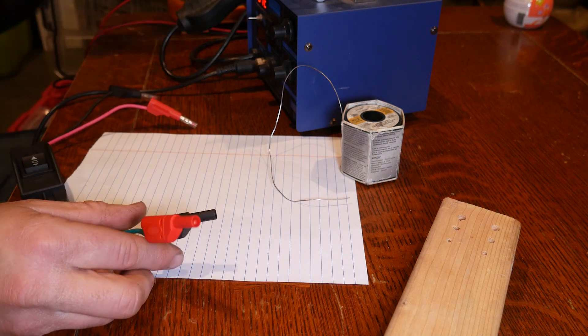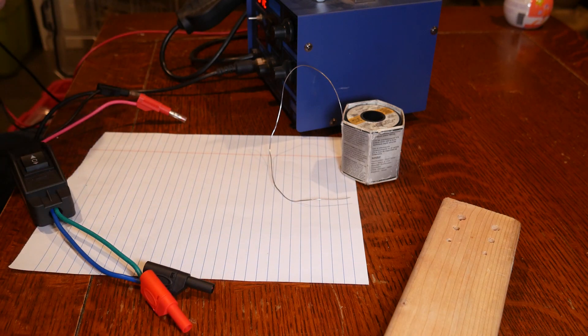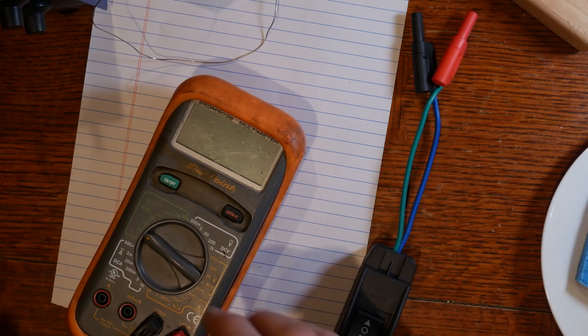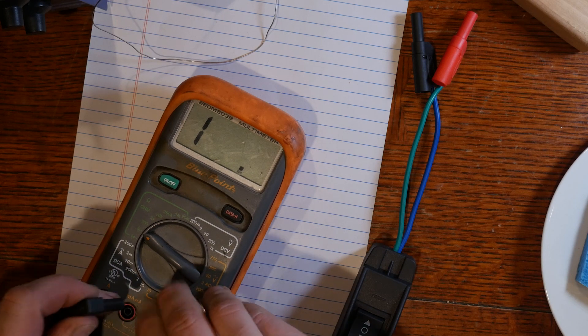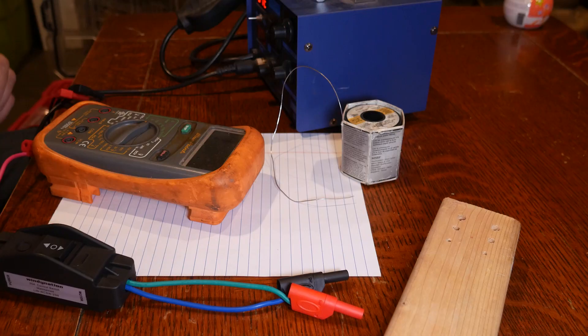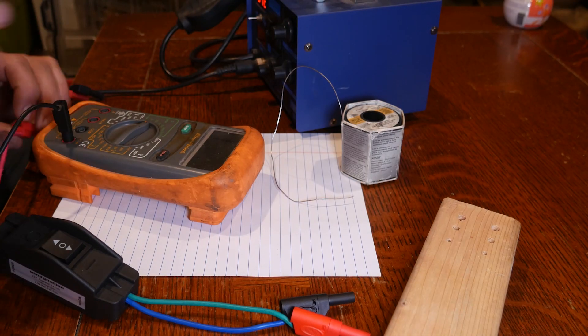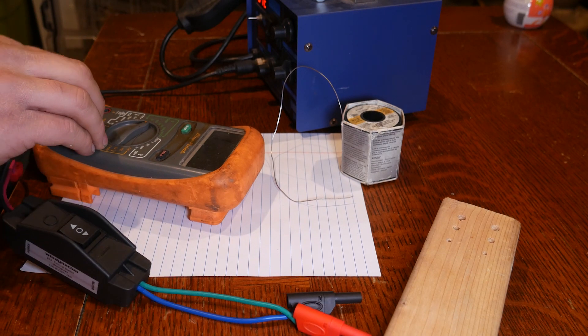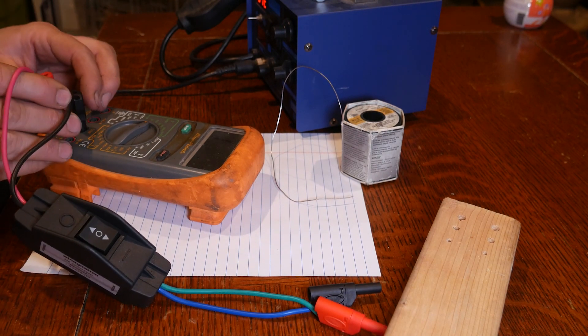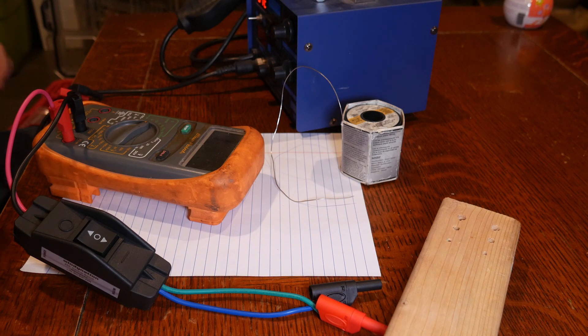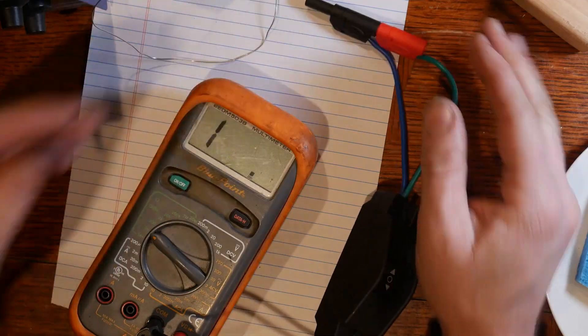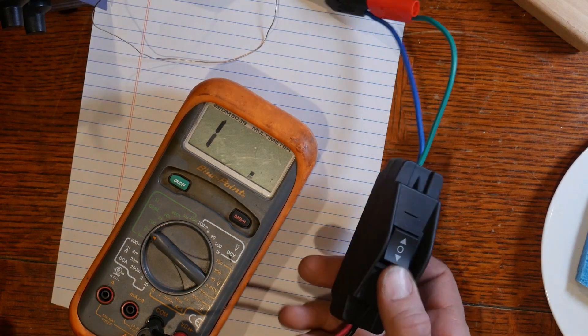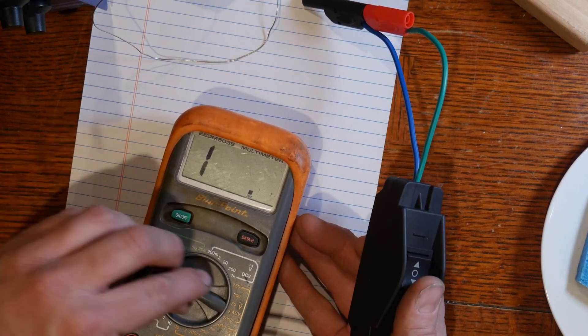I suppose we could test it out. So if we plug this in like so on our meter and then connect these two ends together and go to resistance, will we get a negative in one direction and positive in the other? Let's see.